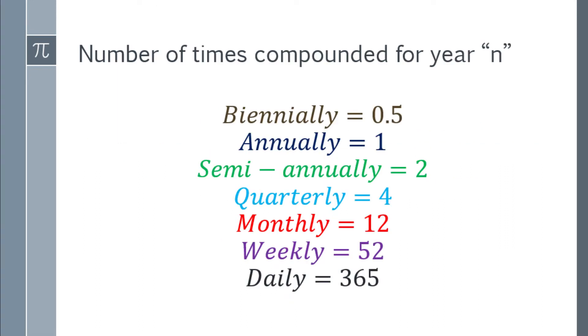Now, let's review the number of times compounded or the compounding frequency for the year n. Biannually is 0.5, that will be every 2 years. Annually is 1. Semi-annually is 2, also called biannually, dalawa sa isang taon. Quarterly is 4, monthly is 12, weekly is 52, and daily is 365.